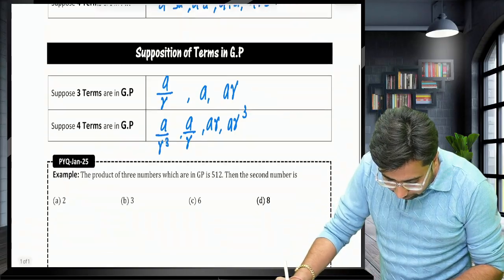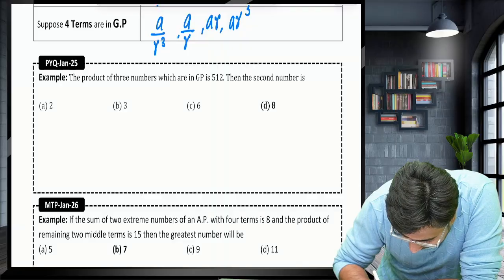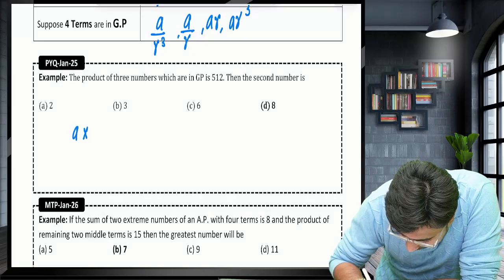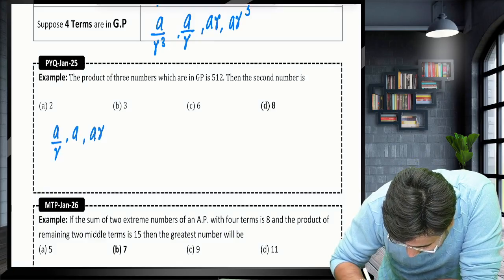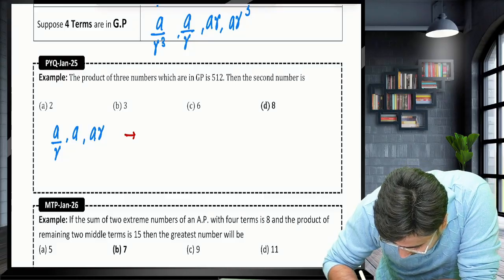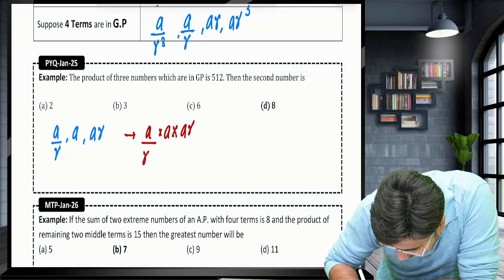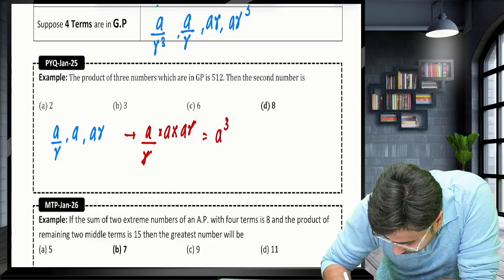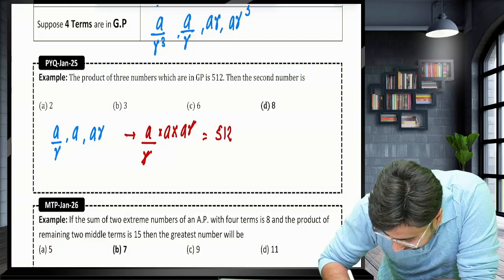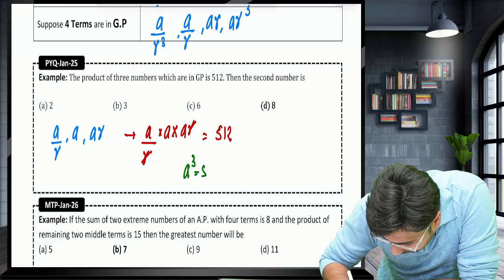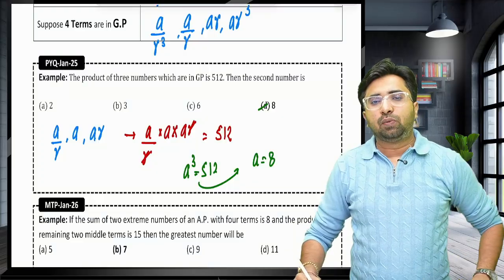The product of 3 numbers in GP. I will assume A by R, A, AR. They are saying the product. If you take the product A into AR into A by R, you will find R will cancel. You will get A cube. They have given you the product of the 3 numbers, 512. So you must be getting A cube equals 512. From here, you will get value of A is 8. In very few seconds, you will get the answer.